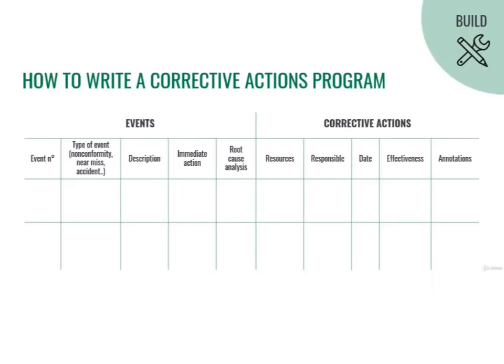How could you make a document that effectively covers what the standard asks? It's easier to divide it into two specific parts: one about what happened — the events — and one about what your company will do to prevent it from happening again. For the event part, you could write: type of event — is it a nonconformity, a near miss, or an accident? Description — write in your own words what happened. Immediate action — just put here what your company immediately did; these are also called corrections.